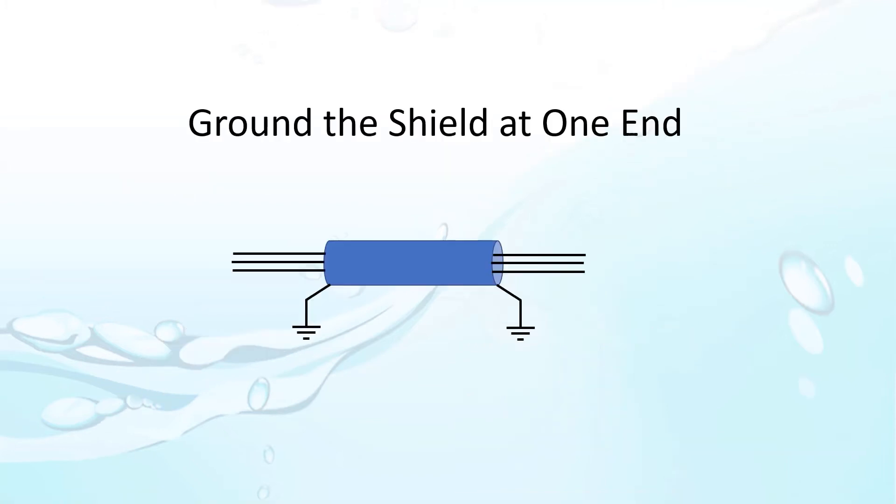And while we are on the subject, make sure you connect the shield to the chassis or earth ground at one end only. Why? Because if you ground both ends, you now have a closed circuit which allows current to flow. So when other nearby or electromagnetic noise sources impose magnetic fields on the shield, it creates current flow.